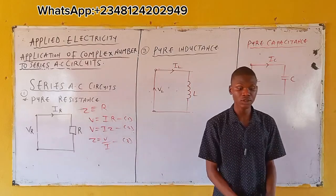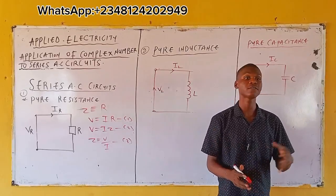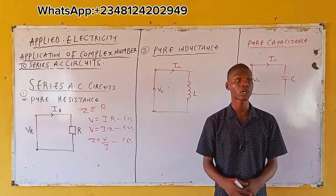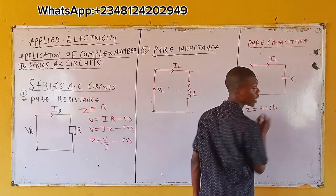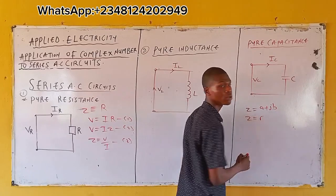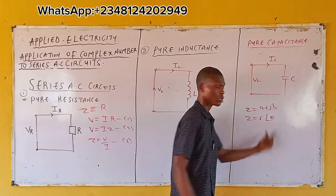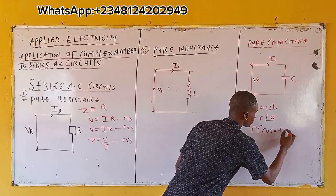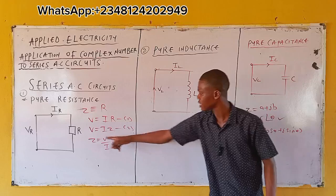We are using complex number representation. From complex numbers we have the Cartesian form and the polar form. In Cartesian form: Z equals a plus jb. In polar form: Z equals r∠θ, which is the same as r(cosθ + j sinθ).